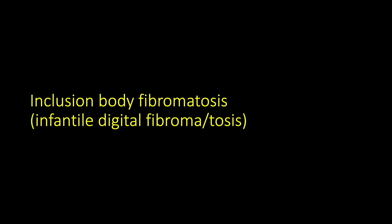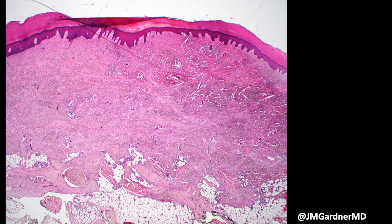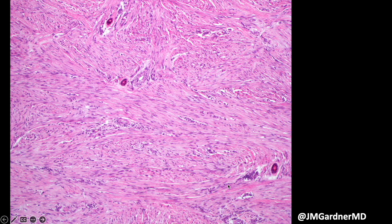Inclusion body fibromatosis, or infantile digital fibroma, is relatively uncommon but a good thing to know about. They often are in the dermis of babies on the digits, and they can extend down into the fat with a little fat entrapment at the bottom. They're composed of bland fibroblasts or myofibroblasts.